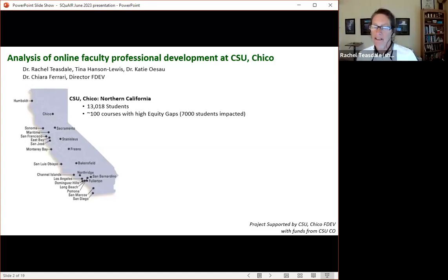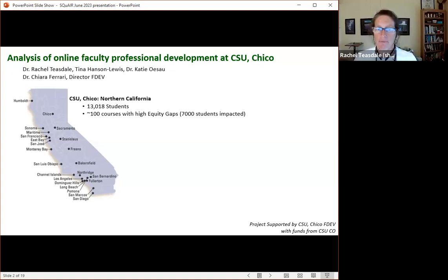This is about some online faculty professional development at CSU Chico. This is a project I worked on with a couple other folks under the direction of Chiara Ferrari, who is our director of faculty development. So Chico's in Northern California. We have about 13,000 students. And I did some data mining of some of our courses that have high DFW rates and equity gaps.